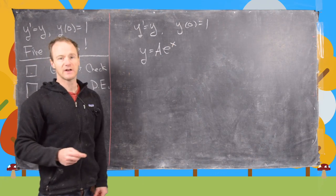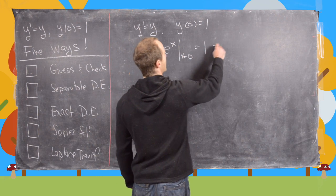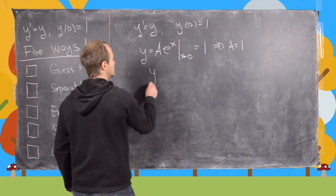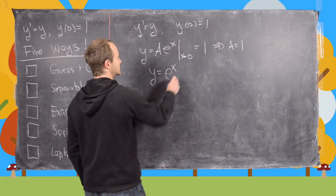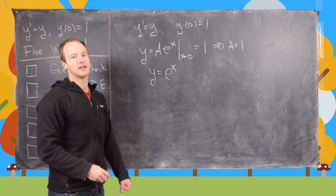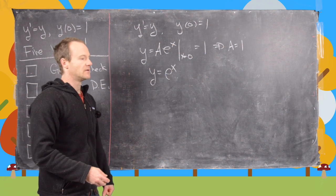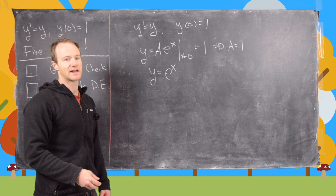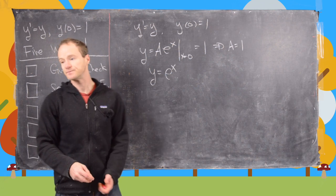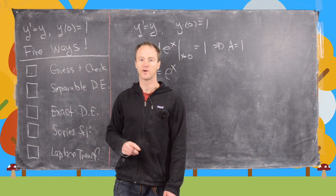But now I've given an initial condition, so if I plug in x equals 0, I should get 1, and that tells me that a equals 1, which tells me that my solution is y equals e to the x. Now you might think that it's kind of cheesy to guess and check a solution, but a lot of really important mathematics on the cutting edge happens by guessing and checking. We've finished our first method.